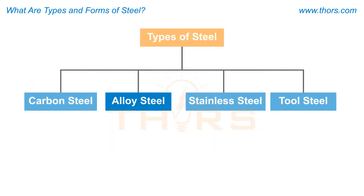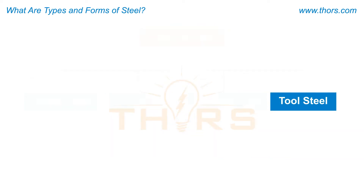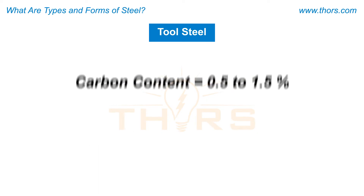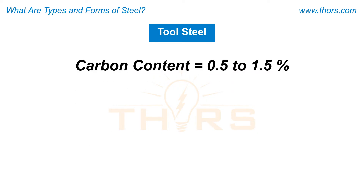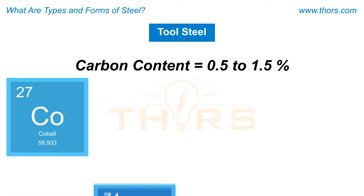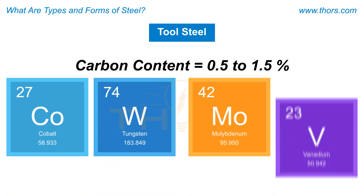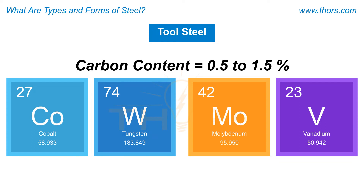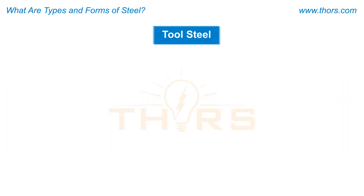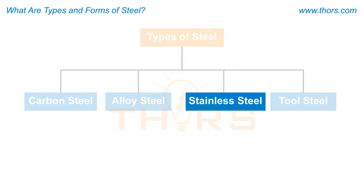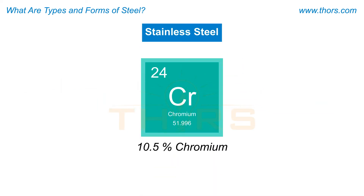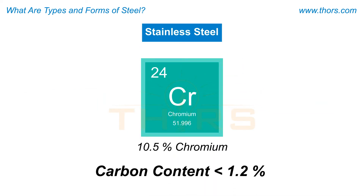Tool steel contains carbides in the matrix with a carbon content ranging between 0.5 to 1.5 percent. This type of steel has varying amounts of cobalt, tungsten, molybdenum, and vanadium to increase heat resistance and durability. Stainless steel contains more than 10.5 percent chromium with a carbon content of 1.2 percent or less, to avoid the formation of chromium carbides.